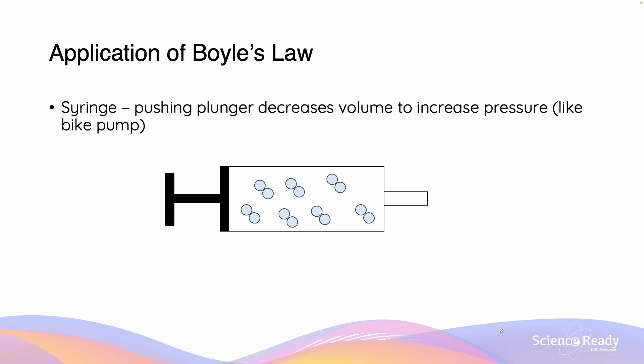Another example of Boyle's law is a syringe. Pushing the plunger of the syringe, assuming that it is sealed, will decrease volume and increase pressure much like a bike pump. Initially, the molecules of gas are moving randomly like such.